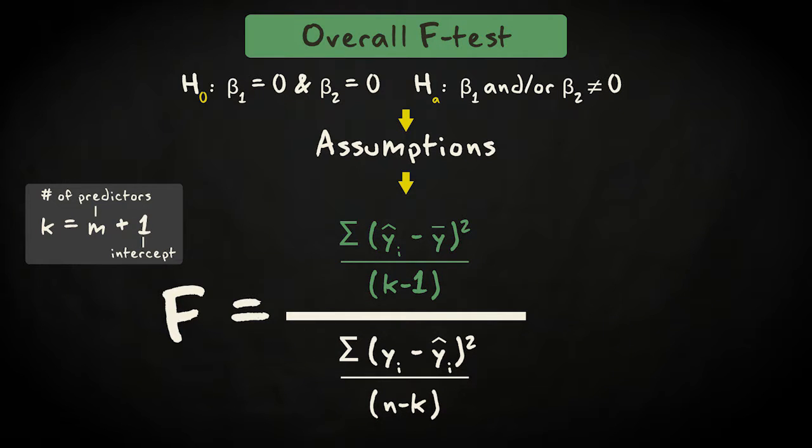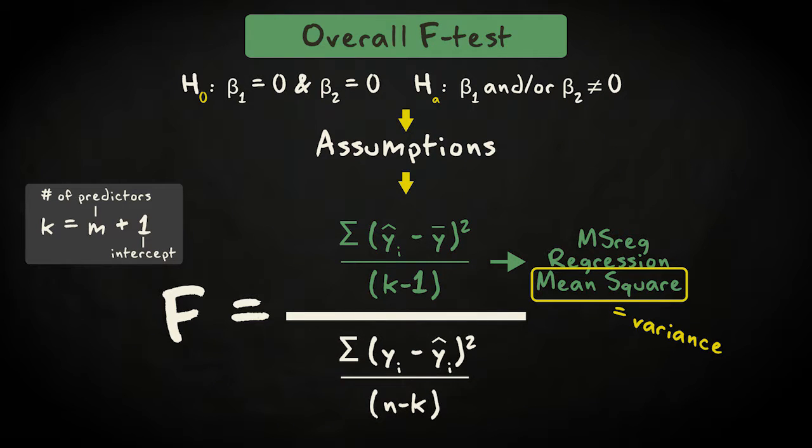The regression sum of squares divided by k minus 1 is called the regression mean square. Now don't be confused by this new term, mean square—it's just another word for variance. It's the variance in the response variable captured by our model.